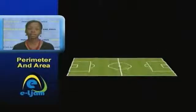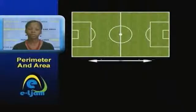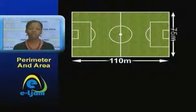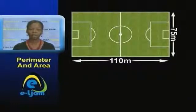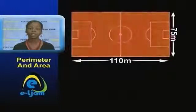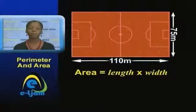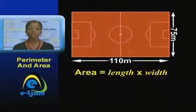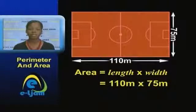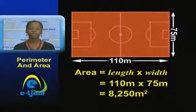Let us go back to that football field I mentioned before. Previously, we found its perimeter, but what if we wanted to know its area? Remember, it's the region within the boundary. So the area of the field would be found by multiplying its length by its width. Therefore, the area of the football field would be 110 meters times 75 meters, which is 8,250 meters squared.